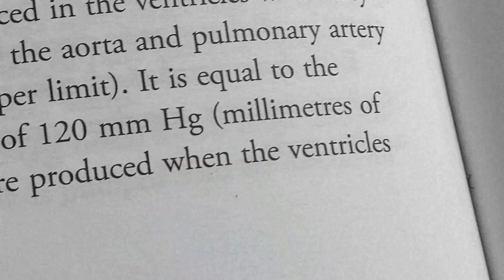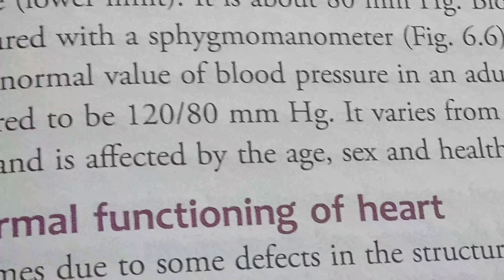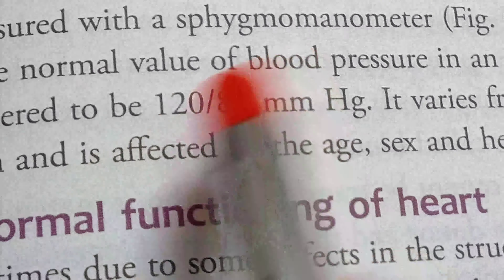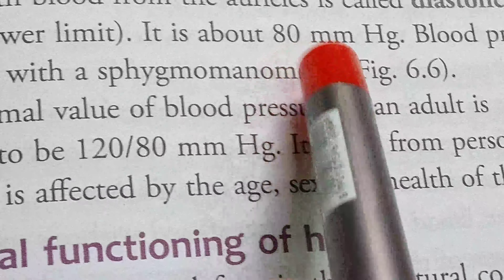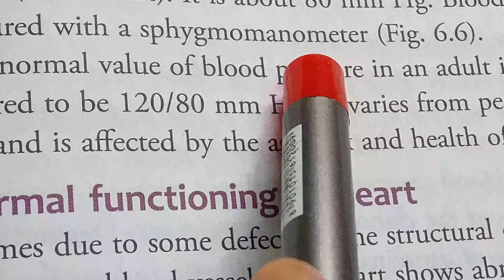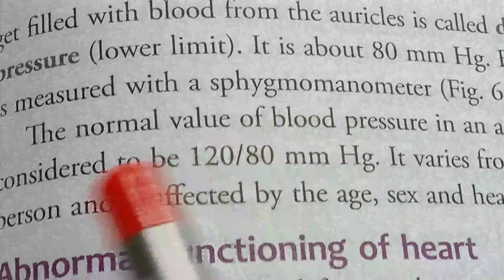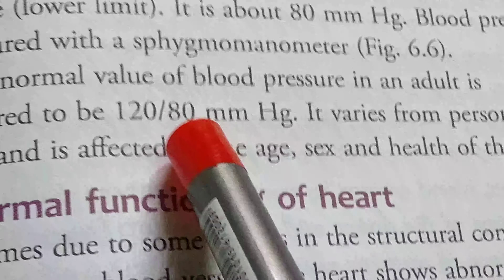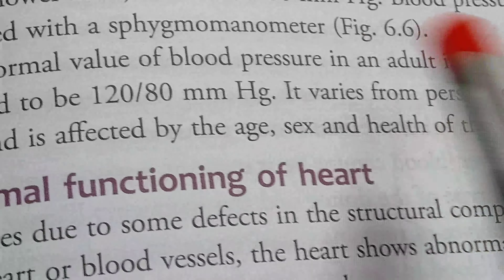The average pressure produced when the ventricles get filled with blood from the auricles is called diastolic pressure, which is the lower limit, at about 80 mmHg. Blood pressure is measured with a sphygmomanometer. The normal value of blood pressure in an adult is considered to be 120/80 mmHg. It varies from person to person and is affected by age, sex, and health.